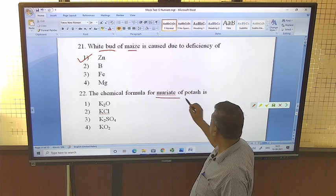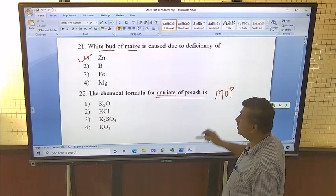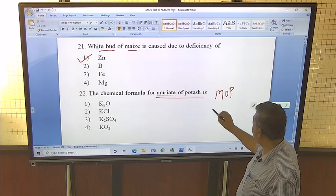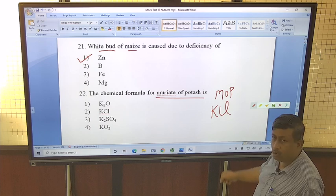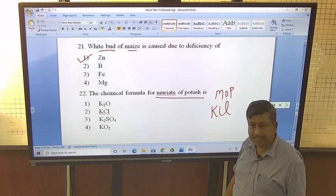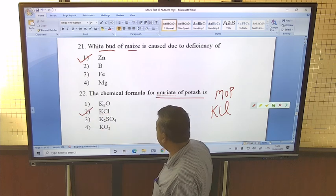The chemical formula of muriate of potash, MOP. We have discussed what is MOP? MOP is KCl. Chemical formula, it is ore obtained from ore sylvite, and formula is potassium chloride. So this is correct option, KCl.